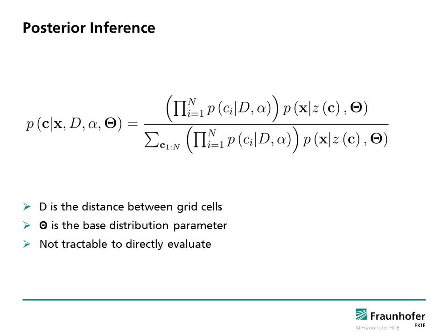After the generative process, clusters can be found by posterior inference. The problem is to compute the conditional distribution of grid cell assignments conditioned on the features, scaling parameter, distances between grid cells, window and base distribution parameters. However, the posterior is not tractable to directly evaluate because of the denominator in the equation.